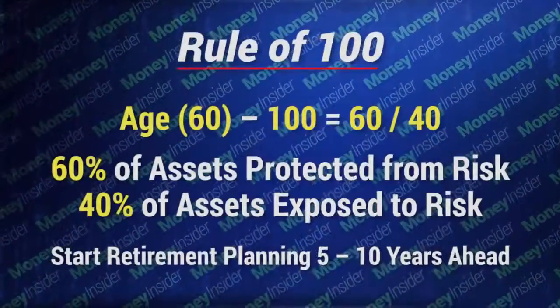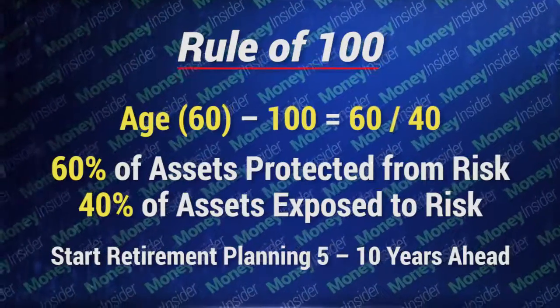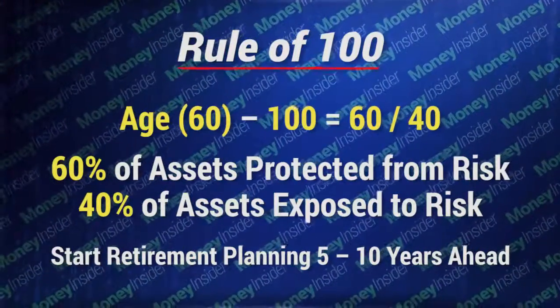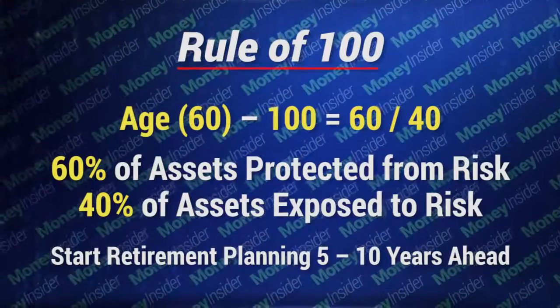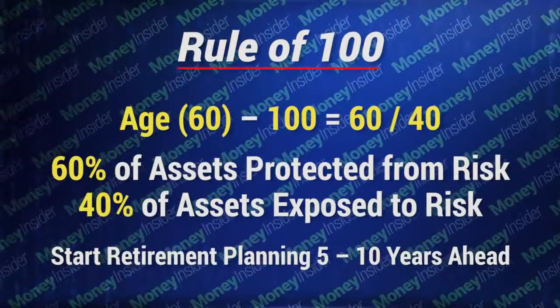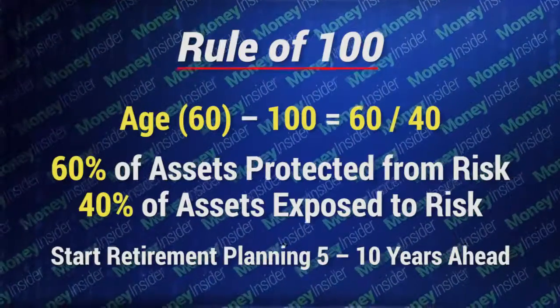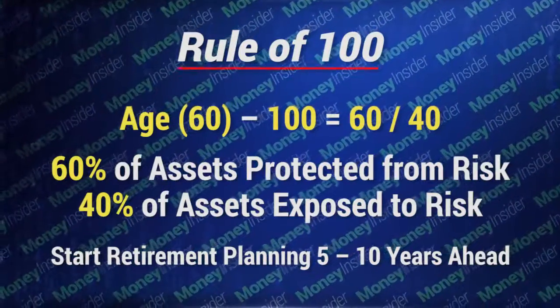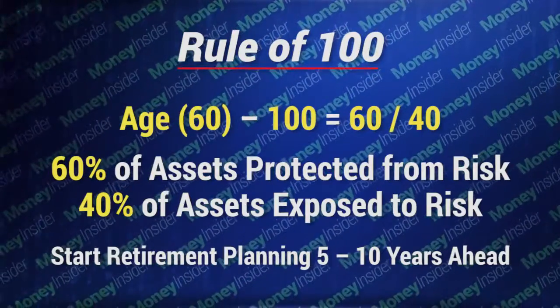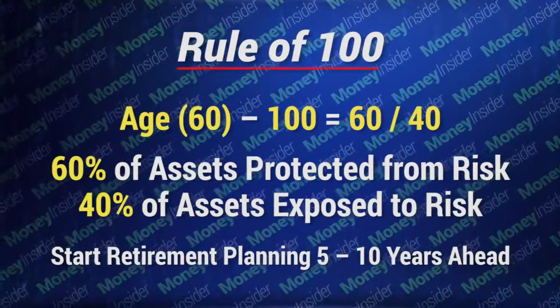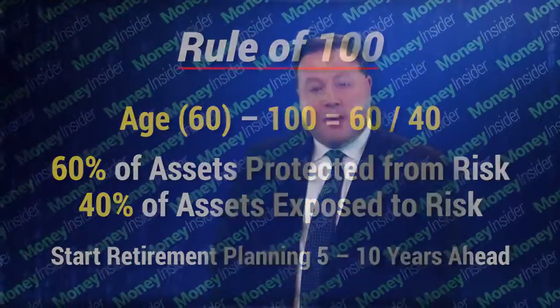That's where we use a guideline called the rule of 100. I have to emphasize it's not a rule, it's just a guideline. What you do is take your age and subtract it from the number 100. So let's say you have a couple who are 60 years old — they would be 60-40. That means they should have something like 60% of their money not exposed to capital risk, that's the ups and downs of the stock market, whereas 40% of their money maybe should be positioned for long-term growth potential. A balance of risk and reward that's age-appropriate is a great way to start thinking about retirement planning, and again it's a process over five to ten years.